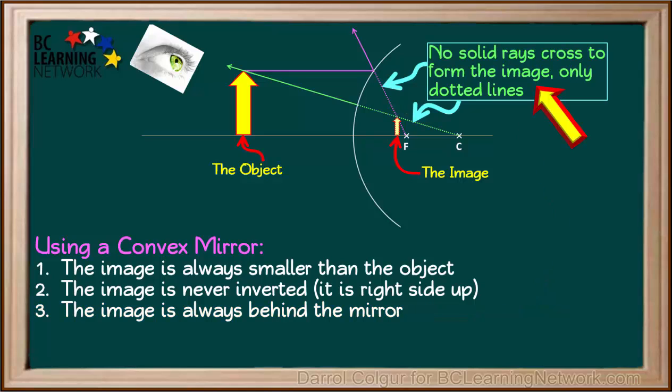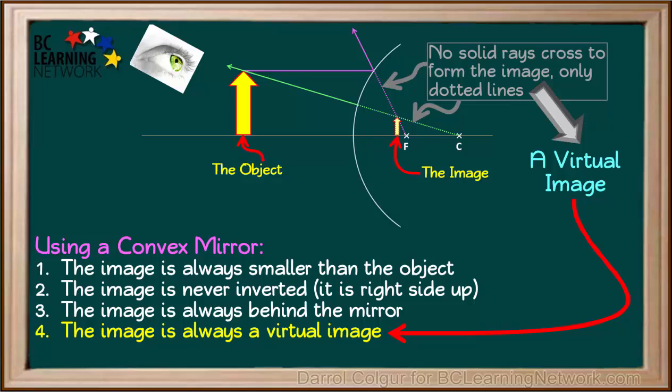Notice that the image here is formed by dotted lines crossing, not by real solid rays. This means that the image is a virtual image. In fact, all images in convex mirrors are virtual images.